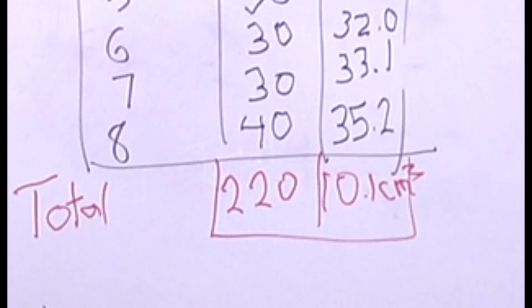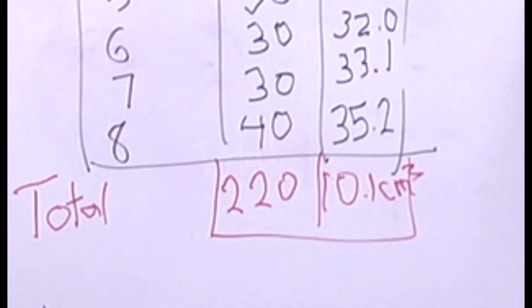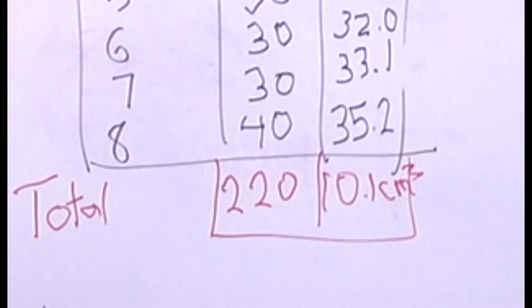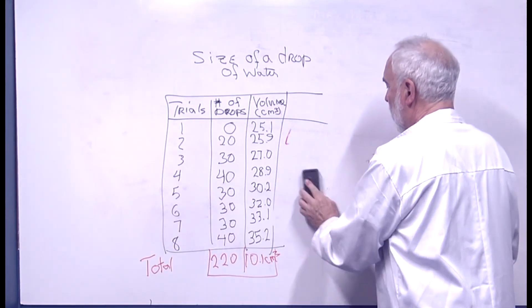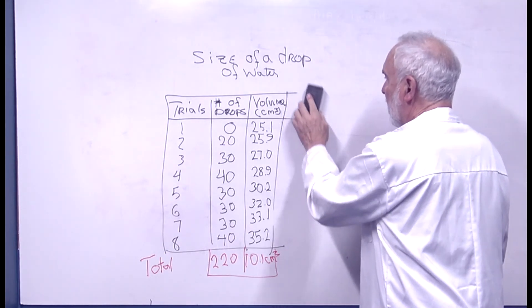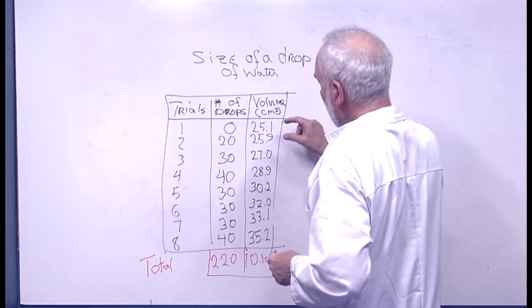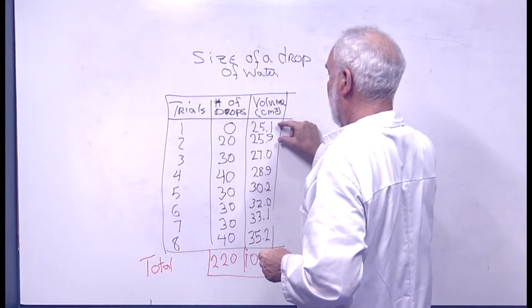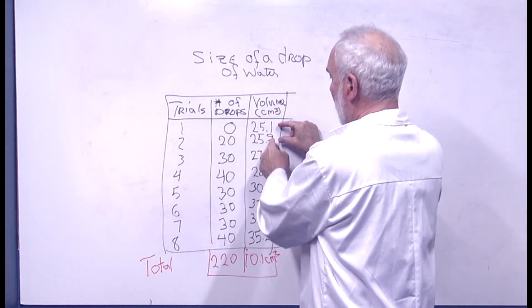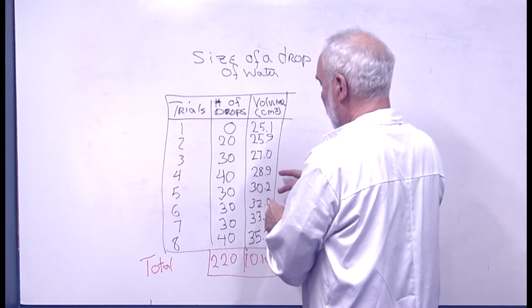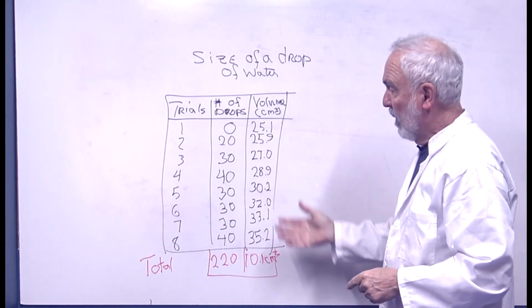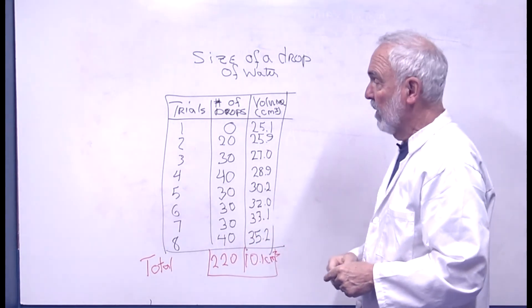We're going to use this data a little bit later on, but right now it looks like it's around 22 drops per cubic centimeter. We'll erase this because we're going to do another data table. Some of these were less than 20, this is less than a milliliter. Some of them were a little more, but that's why we take a large number of data.